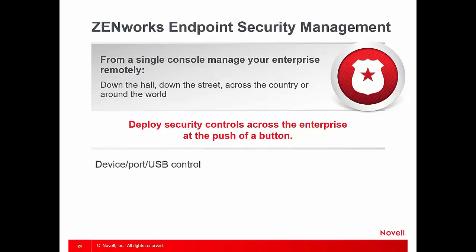Device, Port, and USB Control: protect against theft by controlling the use of removable storage devices like USB drives, MP3 players, zip drives, and more. Port control blocks Bluetooth, infrared, 1394, FireWire, and serial and parallel port connections, preventing unintended or rogue access through any of these connection points. In addition, each hardware type can be enabled or disabled either globally or by location. File and folder encryption: a policy-based safe hardware encryption that encrypts all the data stored in an administrator or user-defined safe location on the folders on the hard drives.